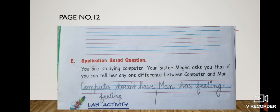E part, application based questions. You are studying computer. Your sister Megha asks you if you can tell her any one difference between computer and man. So you can easily differentiate between man and a computer. I have written computer does not have feelings, then I put a margin in between, and on the other side I have written man has feeling. So computer does not have feeling but man has feeling. So we are done with book exercise now.